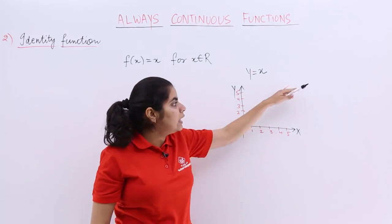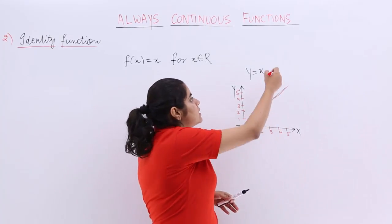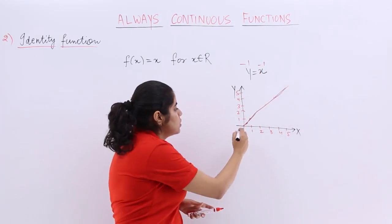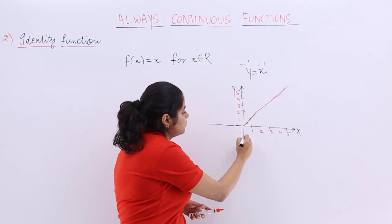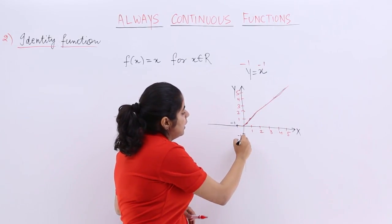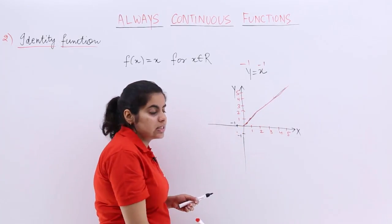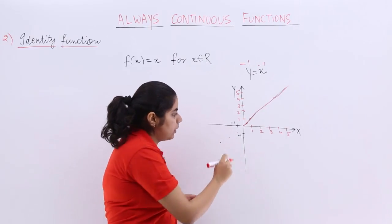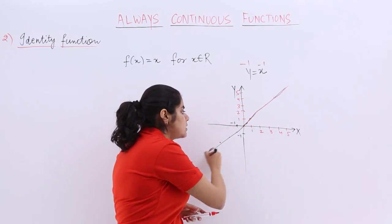Similarly, not only in the first quadrant, but if x is minus 1, then y is minus 1, so it will be here. If I go downwards, minus 1, minus 1 is the first point. Similarly minus 2, minus 2; minus 3, minus 3.